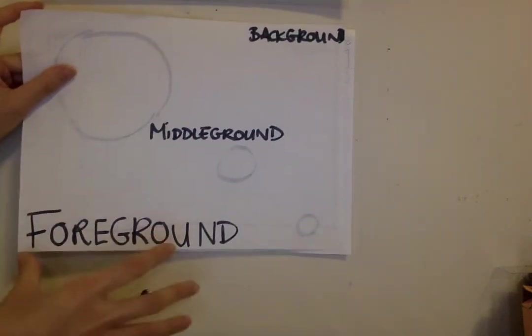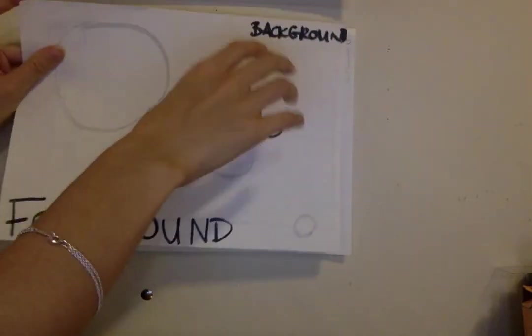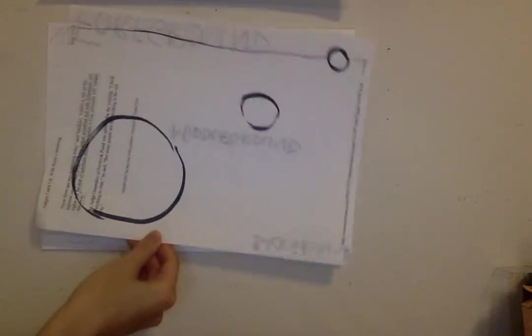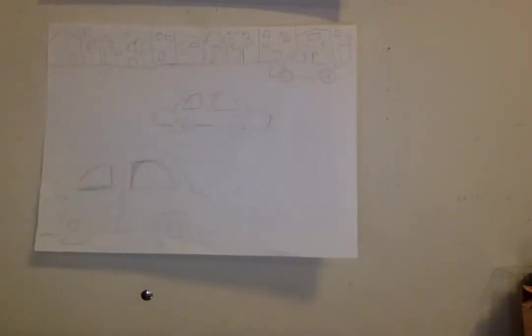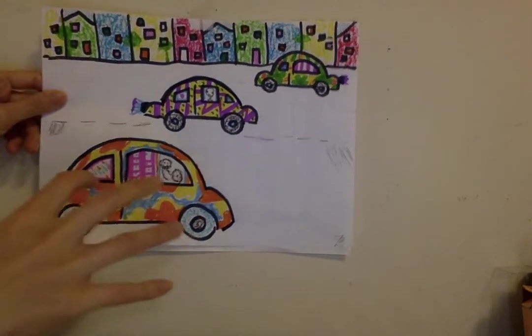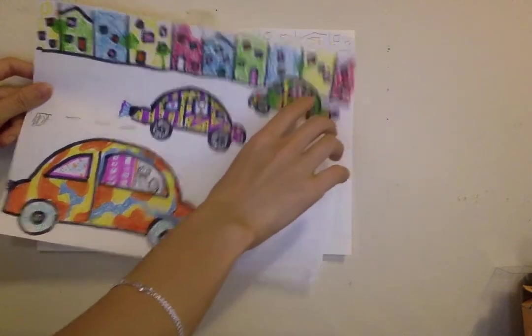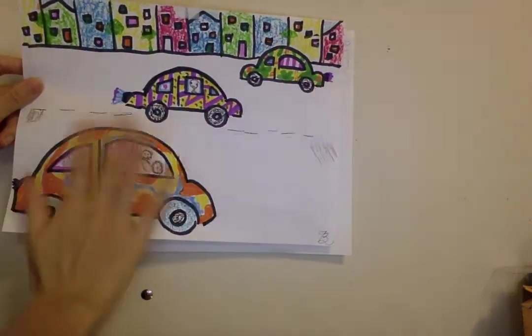So, we're going to run with that idea using foreground. Big object in the bottom of our page. Middle ground. Medium sized object in the middle of our page. And background. Small object on the top of our page, just like this circles. We're going to be using that same idea to draw out a little cityscape. Big car on the bottom. Middle car in the middle. Smaller car on the top. In the back.